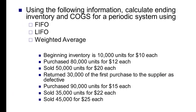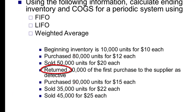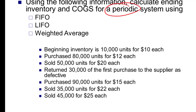Here's the information for our company that has done a bunch of purchasing. They've sent some stuff back, they've sold some items, and we get to keep track of it and decide what their inventory is worth. We're going to start with a periodic inventory system and calculate ending inventory and COGS for FIFO, LIFO, and weighted average.